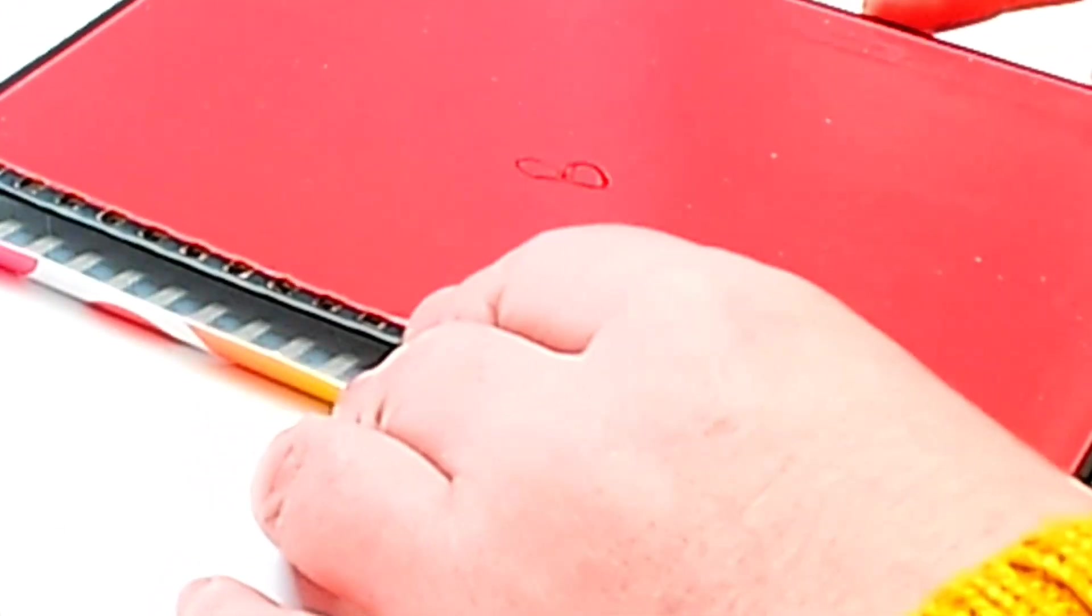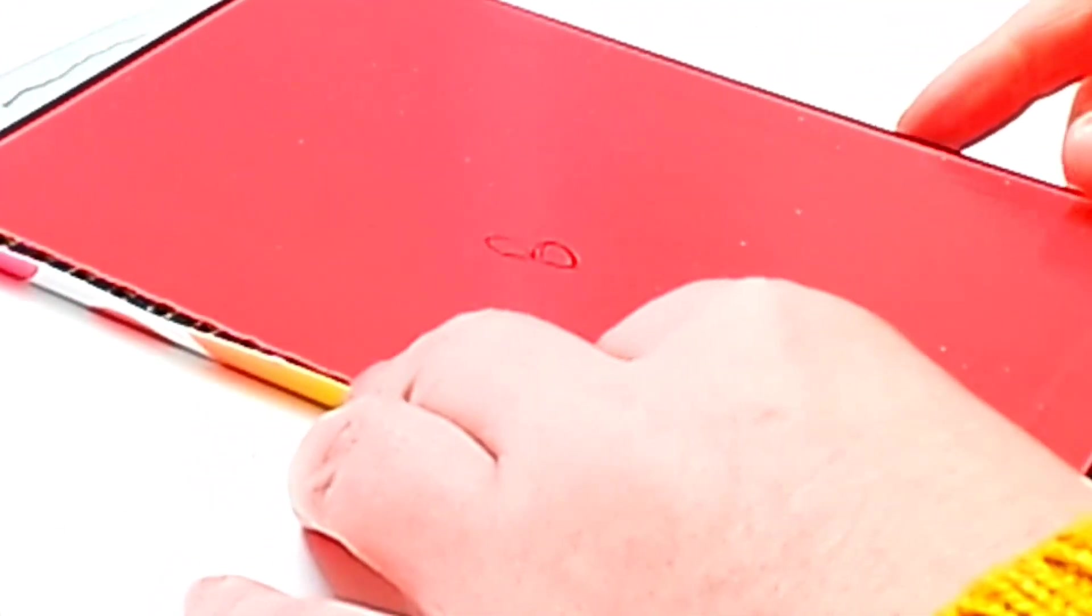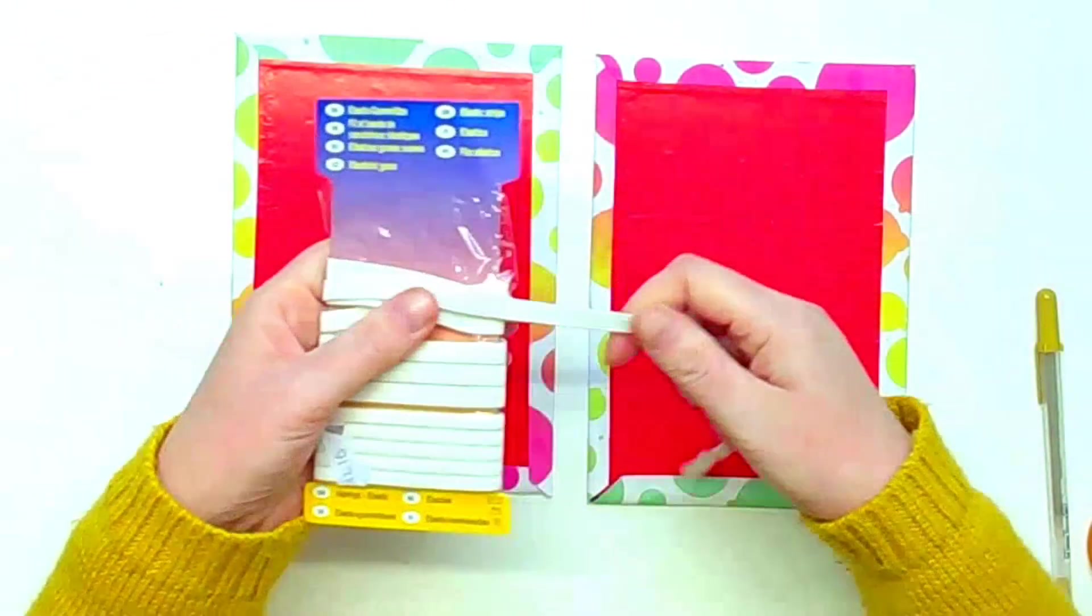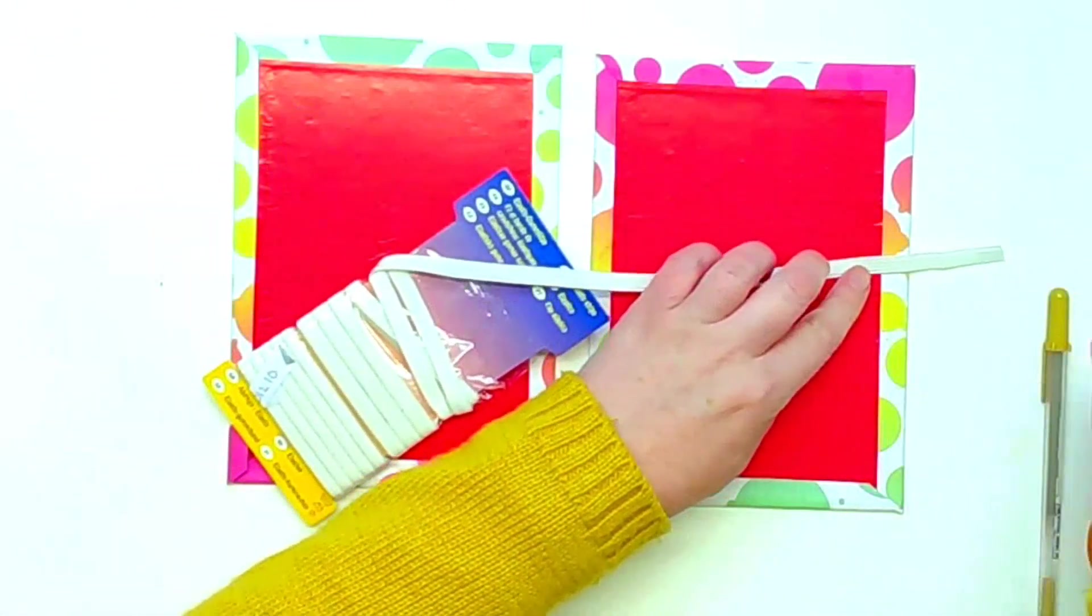I'm just using my tonic studio glue here, putting it all over the back and down the sides, placing the cover in, folding it around, and there you go - you can see it there.